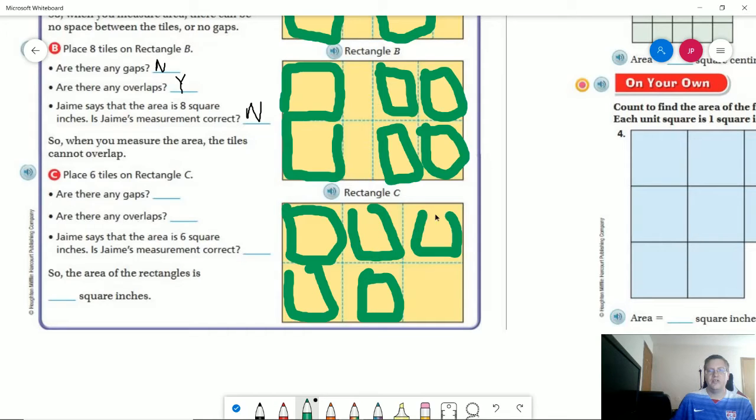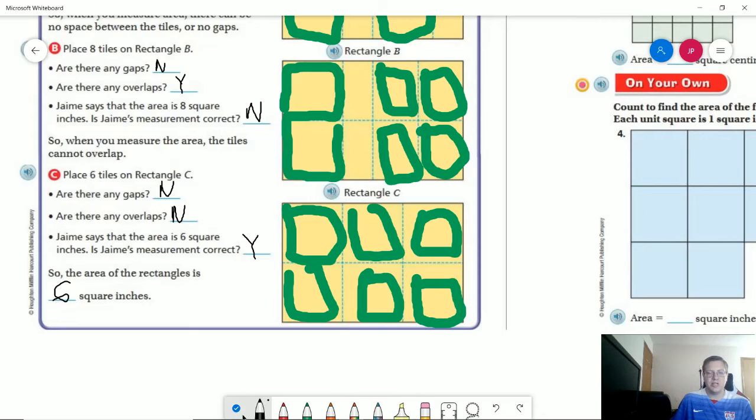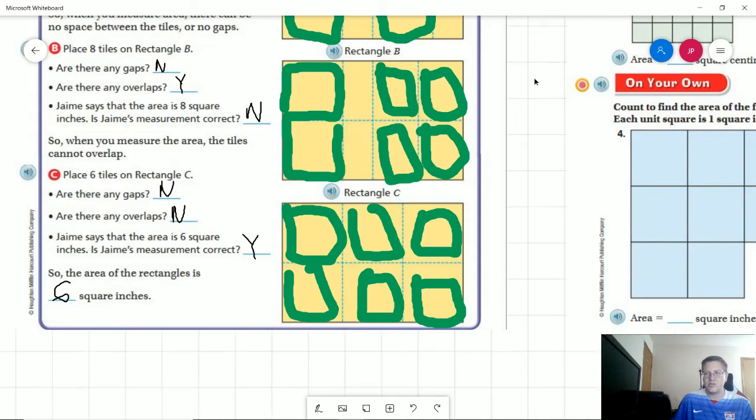four, five, six. And so each of these would fill up the entire amount of the space. There would be no gaps in the shape. There would also be no overlaps which means six square inches or six square units, if we were using something other than inches, would be the correct measurement. And so our area since we are working with square inches would be six square inches.